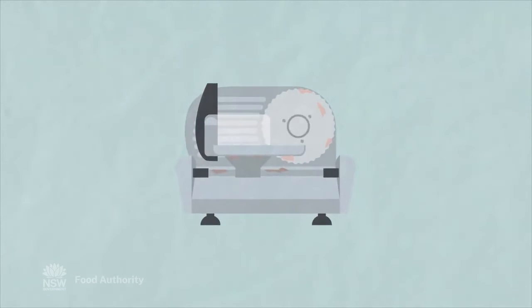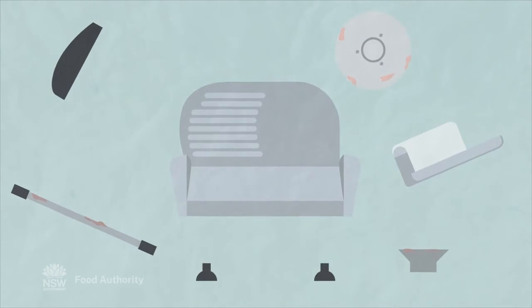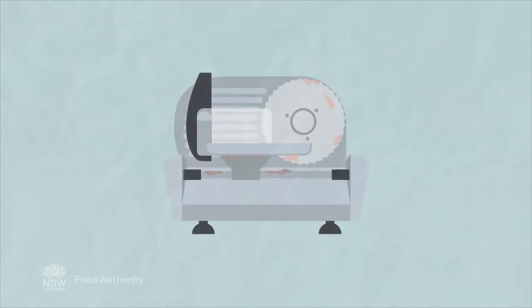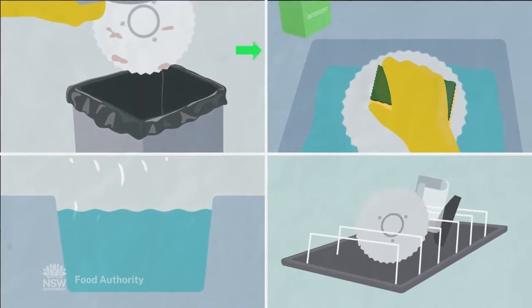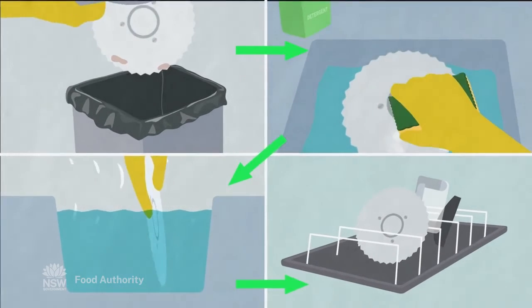Special attention needs to be given to equipment with surfaces that are harder to get to, such as meat slicers, stick blenders, blenders and can openers. Scrape and rinse parts and then wash in hot water and detergent. Sanitise, then ensure everything is dry before putting away or reusing.